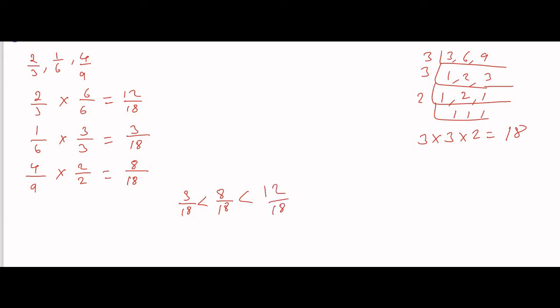The final answer: 3/18 is 1/6, 8/18 is 4/9, and 12/18 is 2/3. So the ascending order is 1/6, 4/9, 2/3.